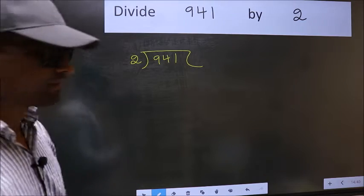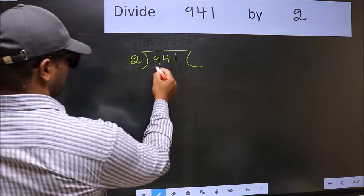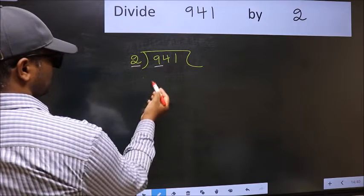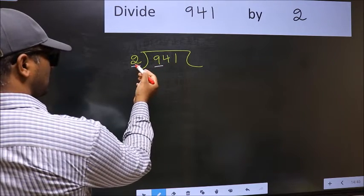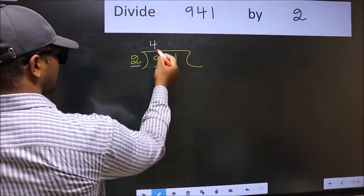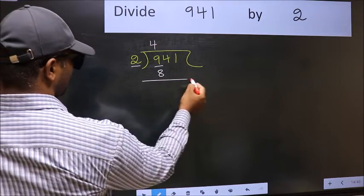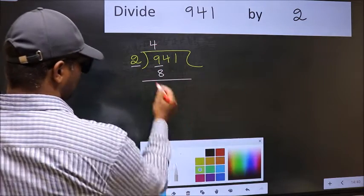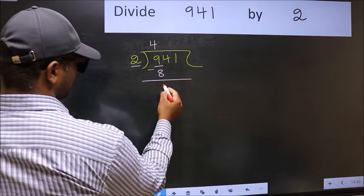Next. Here we have 9 and here 2. A number close to 9 in 2 table is 2 fours 8. Now you should subtract. 9 minus 8, 1.